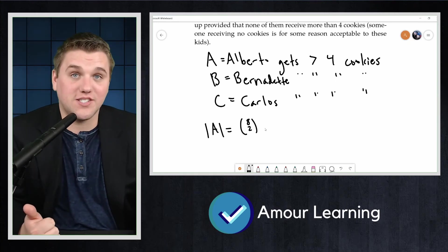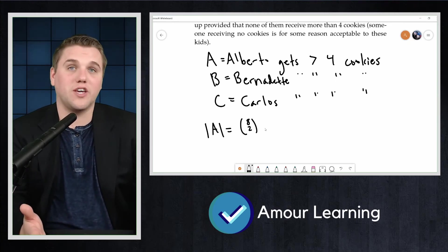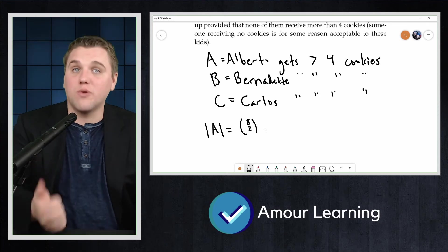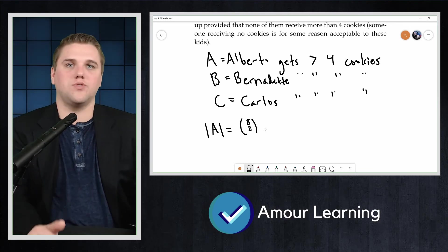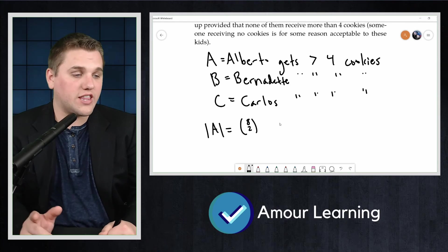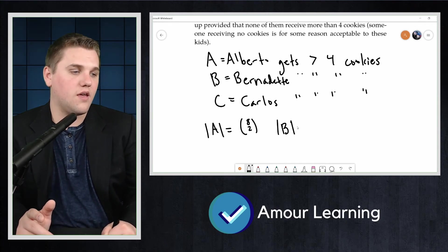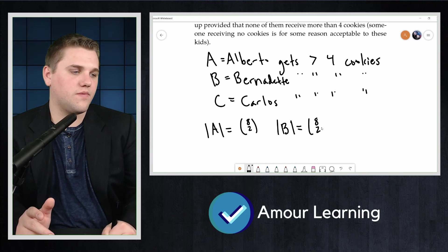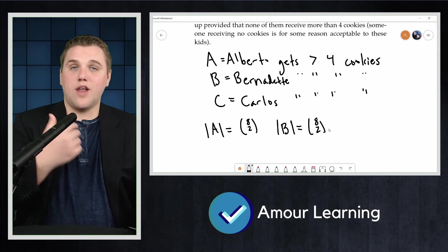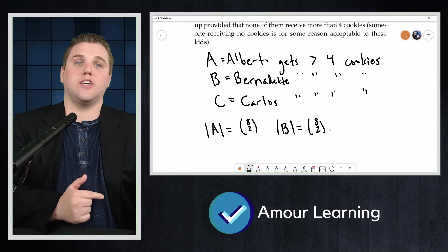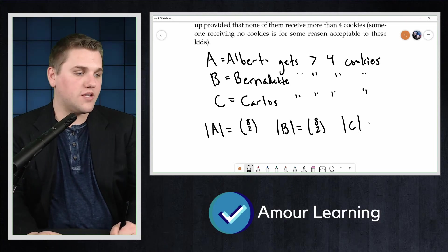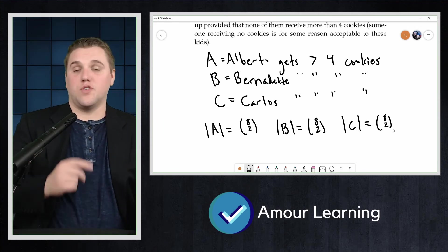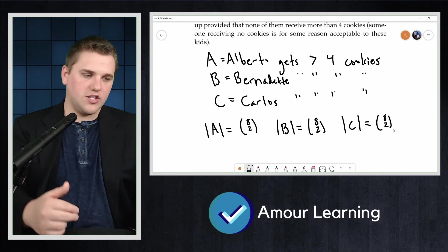First, Alberto gets five cookies because he needs at least four cookies. And then you distribute the remaining six to three kids without restrictions using six stars and two bars, which is 8 choose 2. Just like earlier, we get that B is also 8 choose 2. And so now Bernadette gets five cookies at the start, and then you distribute using stars and bars. And similarly, size of C equals 8 choose 2. So in this case, Carlos gets five cookies first and so forth.